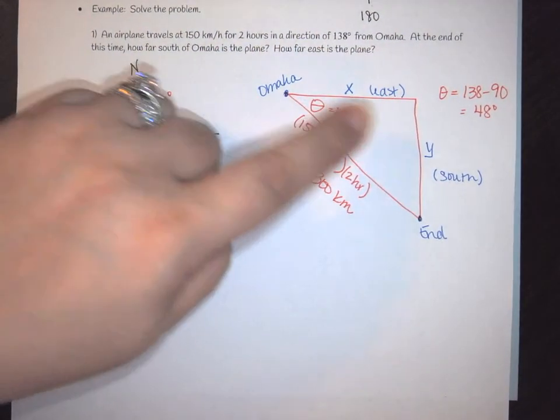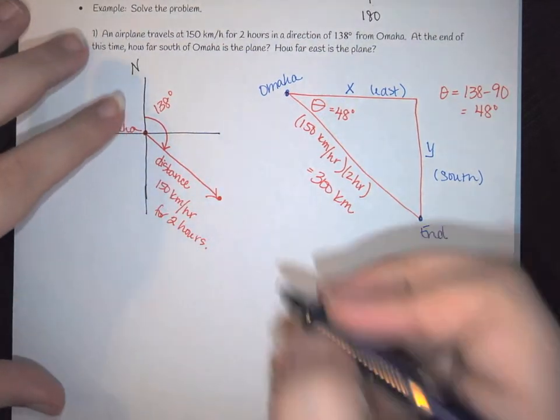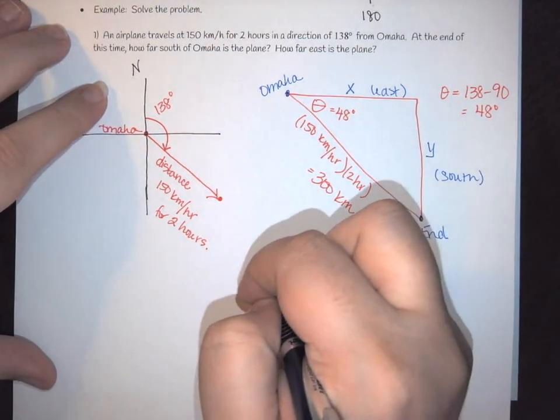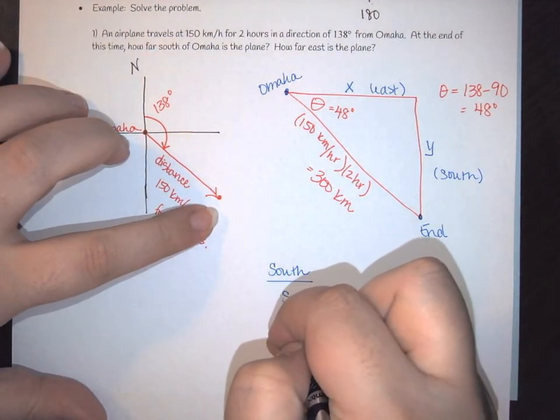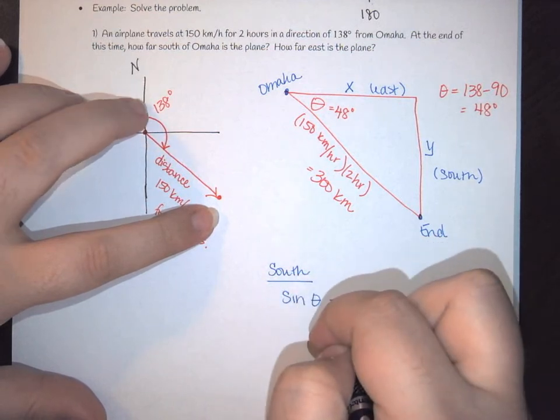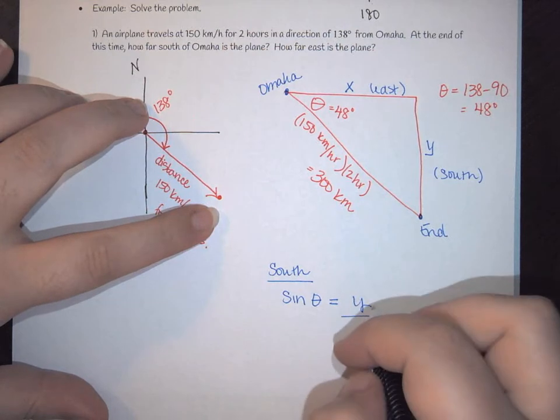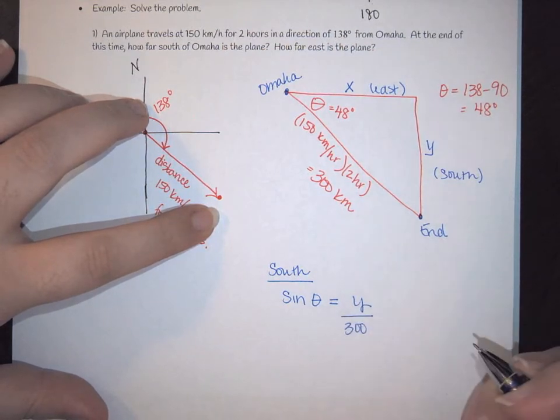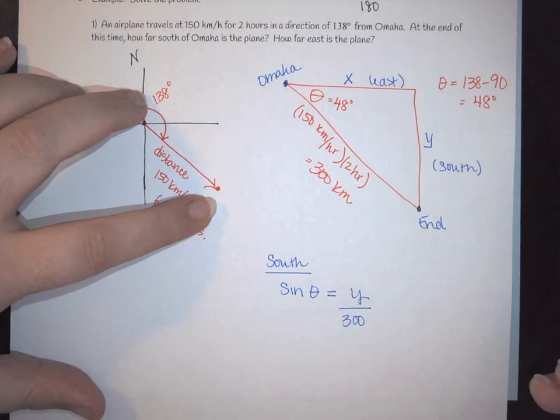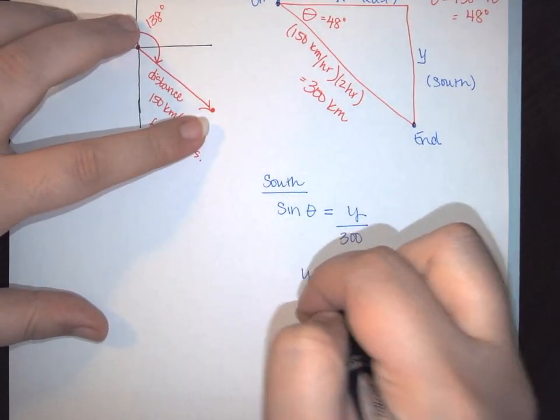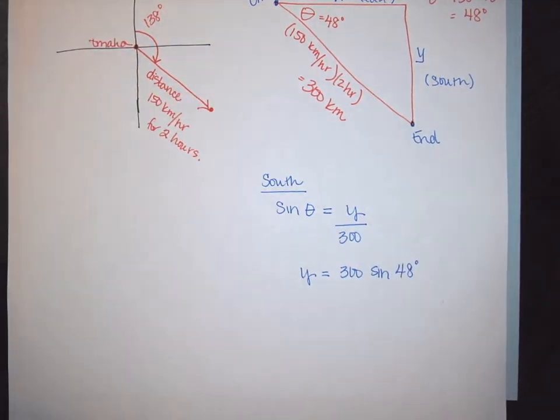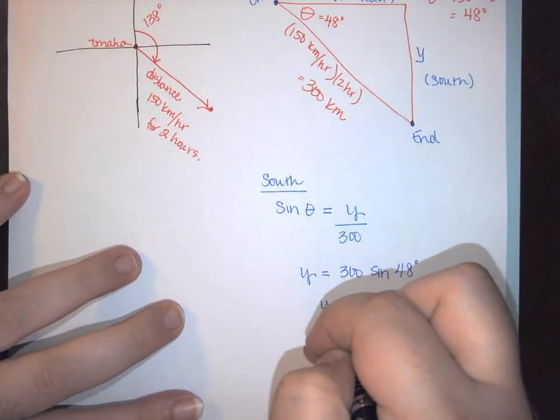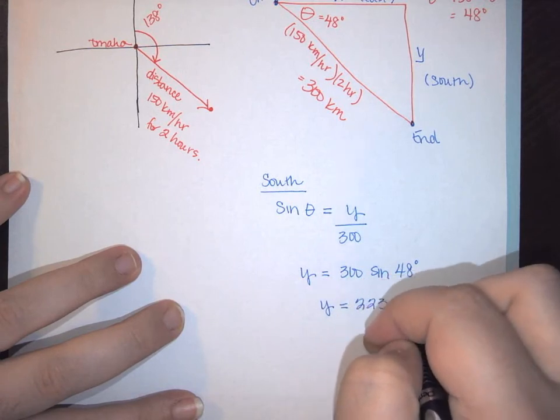If we look at your angle here, what do we actually have? We have opposite over hypotenuse. So in order to find south, we can start with south. We have the sine of my angle is going to be opposite, so y over hypotenuse 300. So this is going to tell me that y is equal to 300 sine of 48 degrees. You're going to plug all of that into your calculator and you're going to come out with y being 223 kilometers.